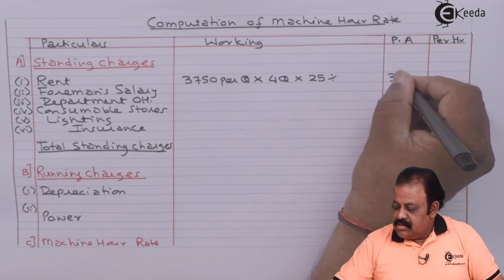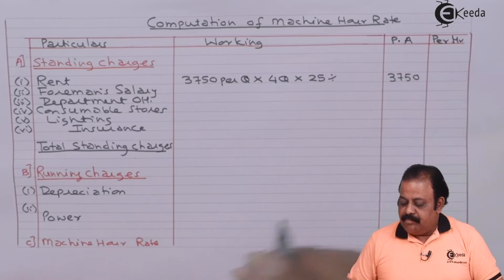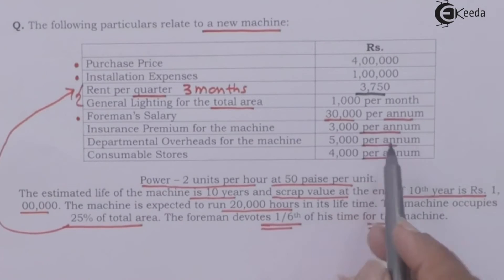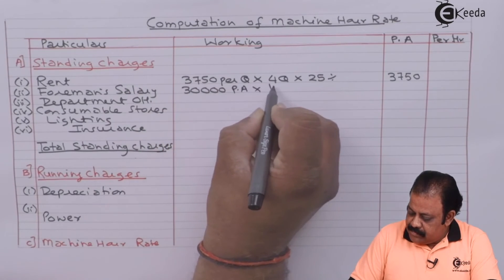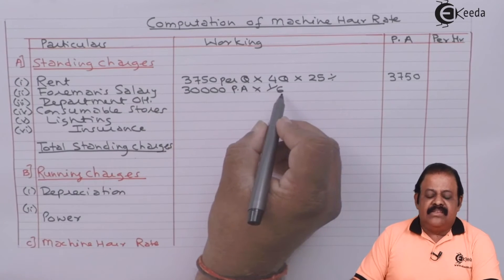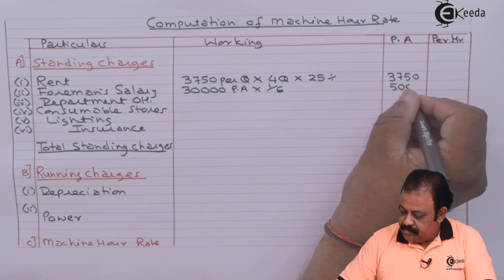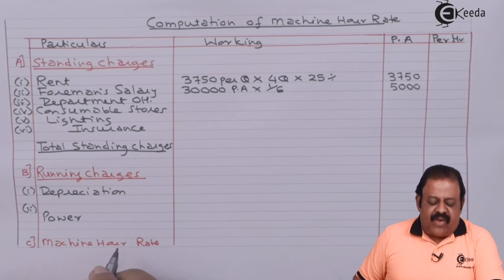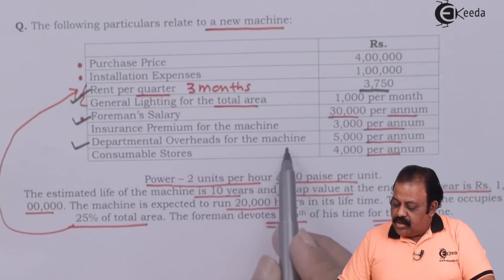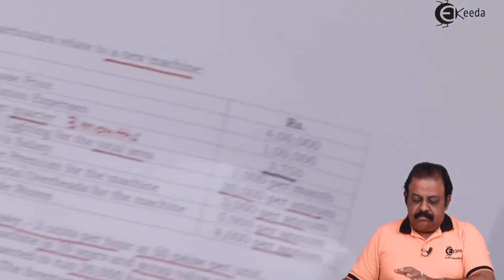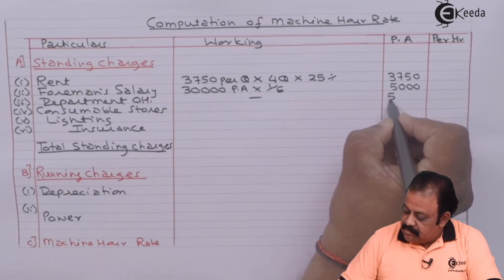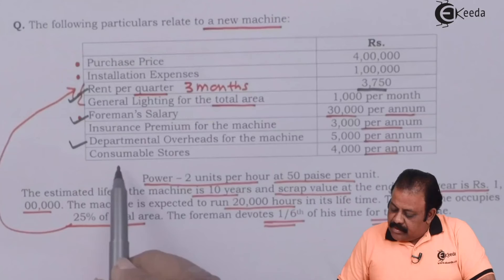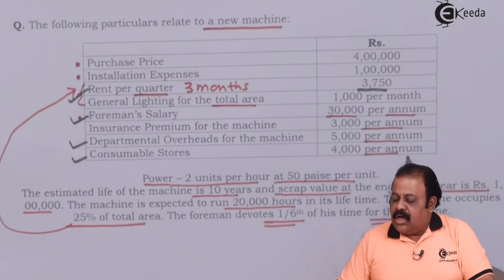Foreman salary is 30,000 per annum and the foreman devotes one-sixth of his time for the machine. So 30,000 multiplied by one-sixth equals 5,000 per annum. Departmental overheads for the machine are directly given as 5,000 per annum — no working required. Consumable stores are also directly given as 4,000 per annum.